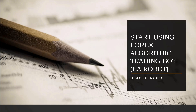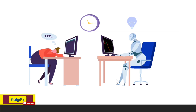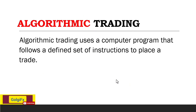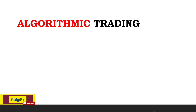Algorithmic trading, also known as automated trading or algo trading, is a computer program that follows a defined set of instructions or algorithms to place a trade. Using these algorithms or robots, traders can generate profit at a speed and frequency that is impossible for a human trader. These instructions are based on timing, price, and mathematical models, and since bots are controlled by instructions, there is no emotional trading.